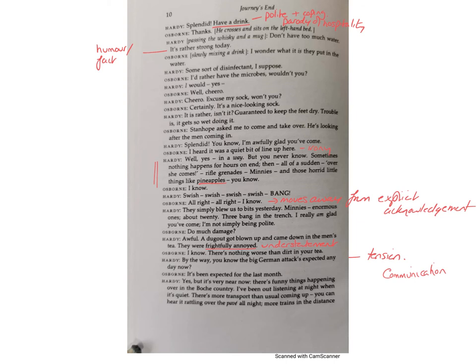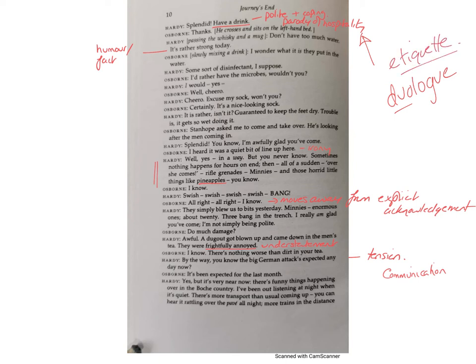We then have a duologue — speaking roles for two actors — between Hardy and Osborne, which is expository, setting out information. Often in this play, politeness, etiquette, and manners become a kind of parody of real-world behaviour, a mimicry of everyday life, to keep up standards and distract them. If you imagine somebody coming into your house offering hospitality — that's exactly what's happening: they have translated their everyday existence into everyday existence in the trenches.